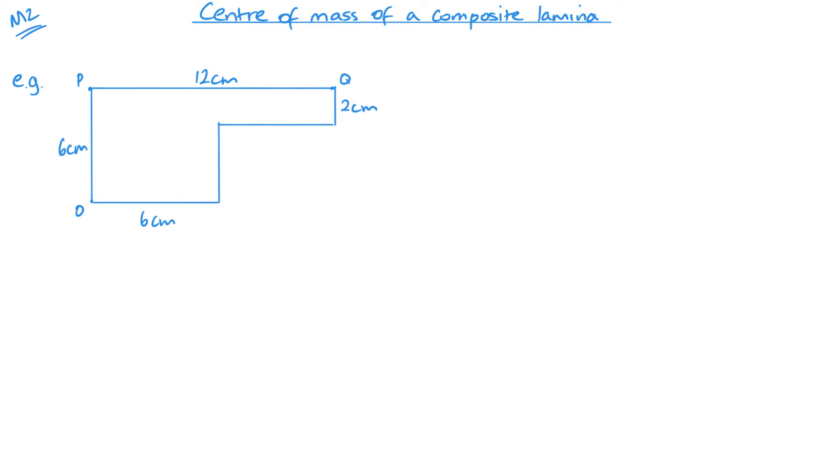Here we have a composite laminar. What I need to do is split this up into essentially two rectangles or a square and a rectangle. I could separate it out across this way. Alternatively, I could separate it this way. It doesn't really matter which way we choose. I'm going to go with this way, and it means I need to find this length here.